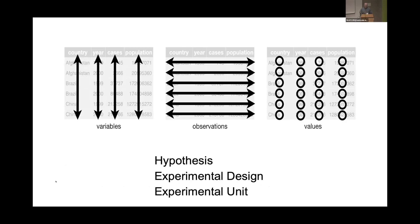So how do I tackle it? I go back to the basics: hypothesis, experimental design, and experimental unit — which you might also be familiar with as the tidy format. Very simple principles: structure designs as columns for the variables, observations in the rows, and values at the intersection of each column and row.